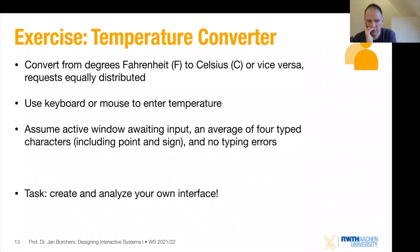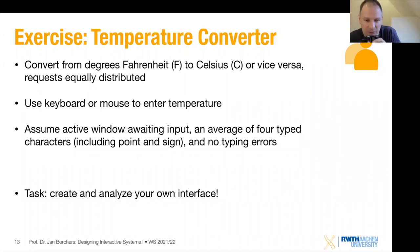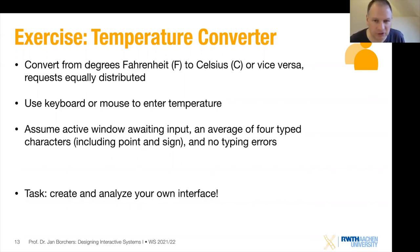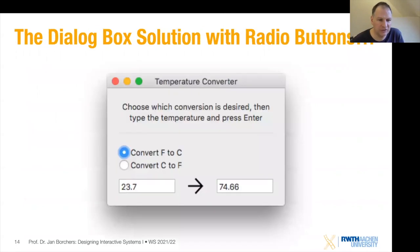I'll give you a minute to sketch that out, then show you a sample solution. Here's a very simple version — you may have created something similar as it's a fairly obvious first shot. We have a temperature converter app with a radio button to select 'convert Fahrenheit to Celsius' or 'convert Celsius to Fahrenheit', an input area to type the value, and a second area where the result is displayed. This is not a beautiful interface, but we're only concerned about speed. Bob does this a lot, so the GOMS assumption of an experienced user doing a routine task applies.